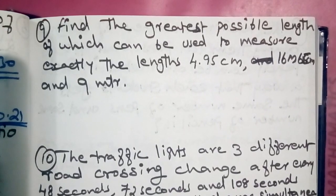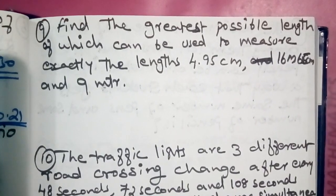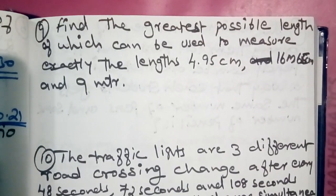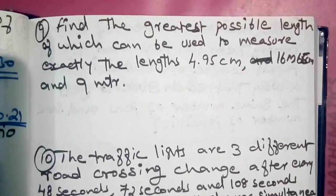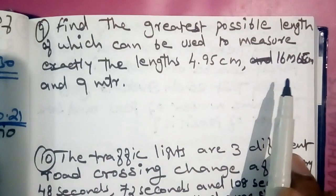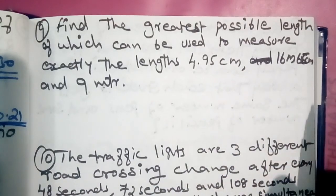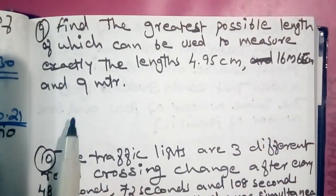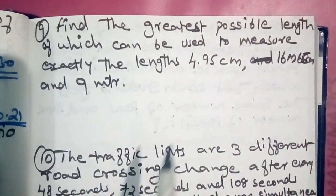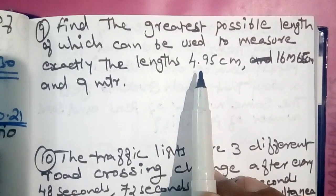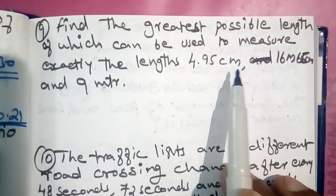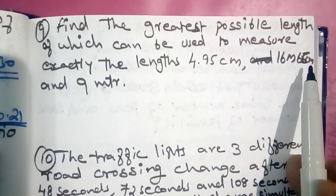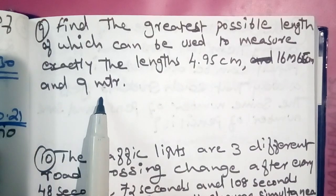Find the greatest possible length which can be used to measure exactly the lengths of 4.95 cm, 16 meters, and 9 meters.